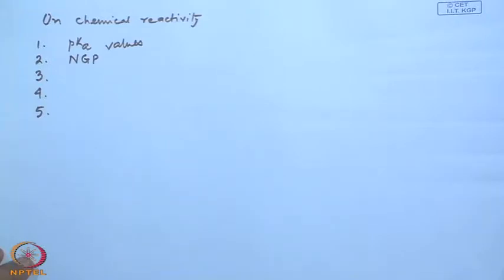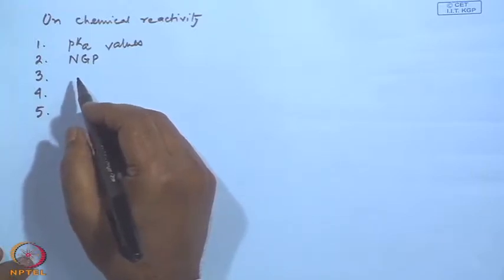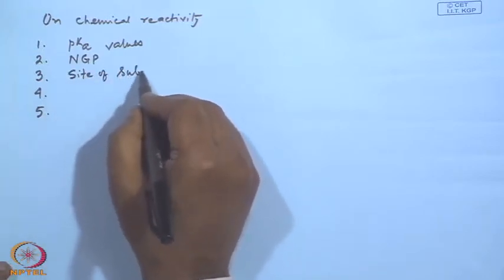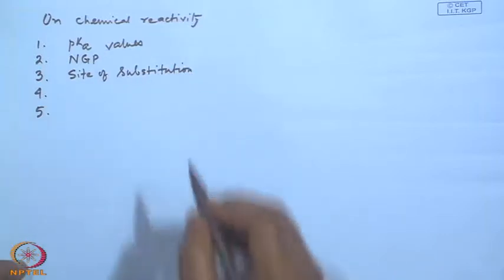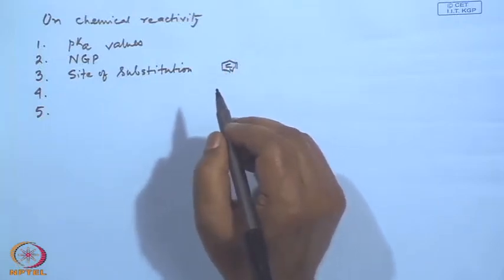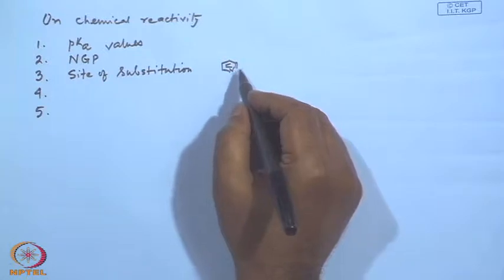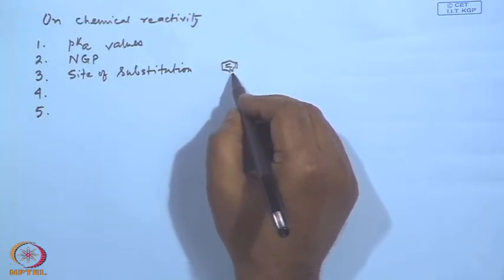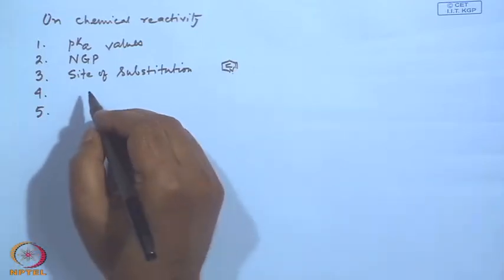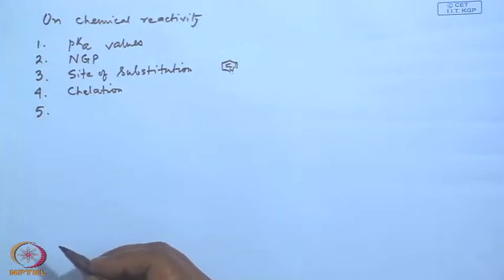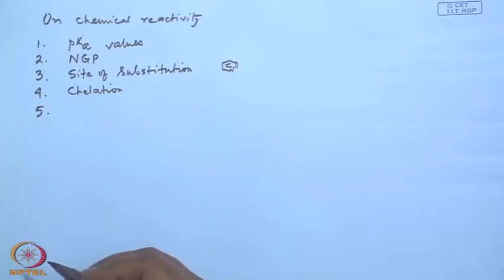Another well-known effect is neighboring group participation. A third category could be the site of substitution — nucleophilic substitution. When I talk about this, I mean for a molecule like pyridine, the orientations or positions of nucleophilic or electrophilic attacks are governed by the nitrogen.